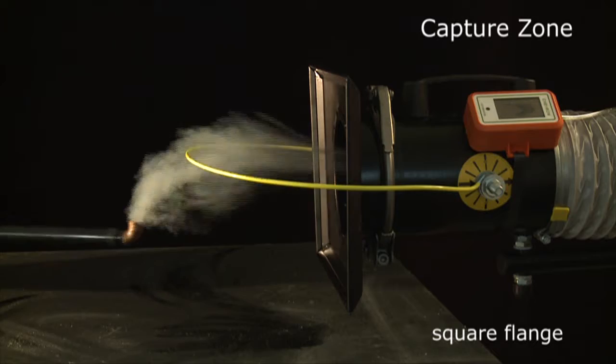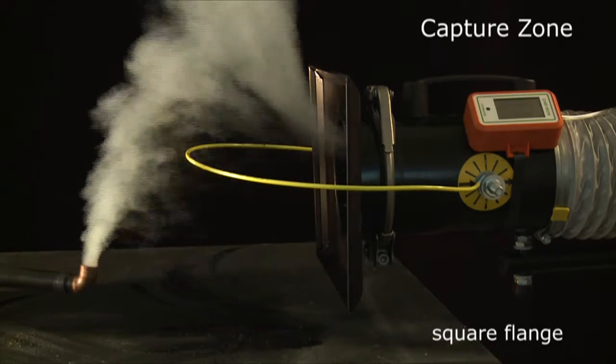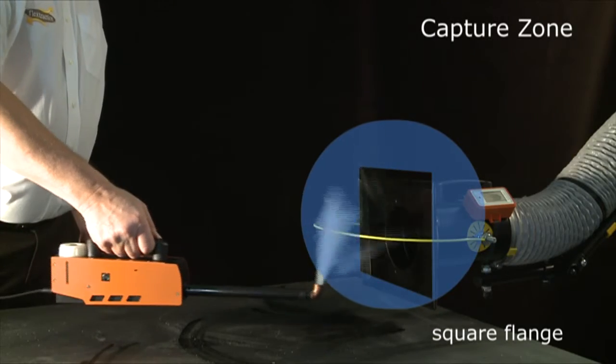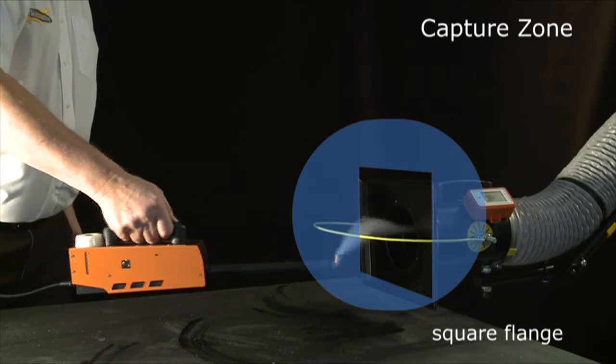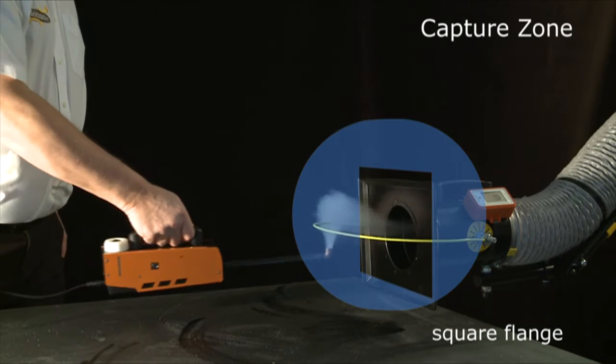A flange restricts the movement of air from behind a hood, changing the shape and extending the capture zone in front of the hood. It reduces turbulence in the airflow into the hood, which improves the effectiveness.